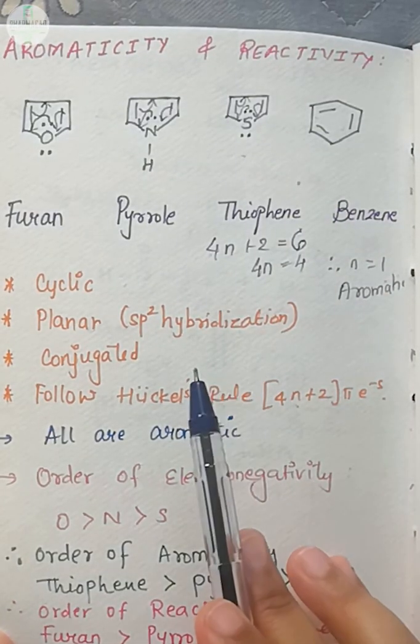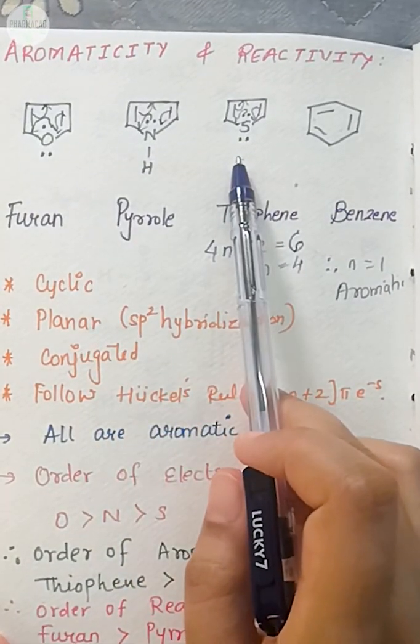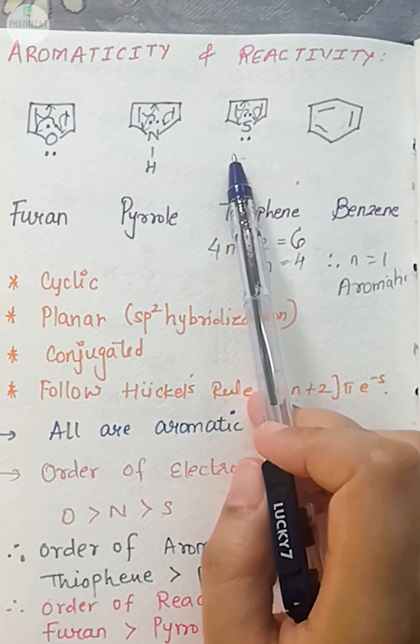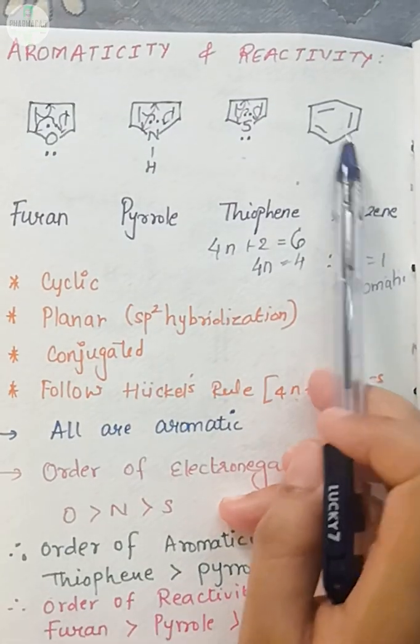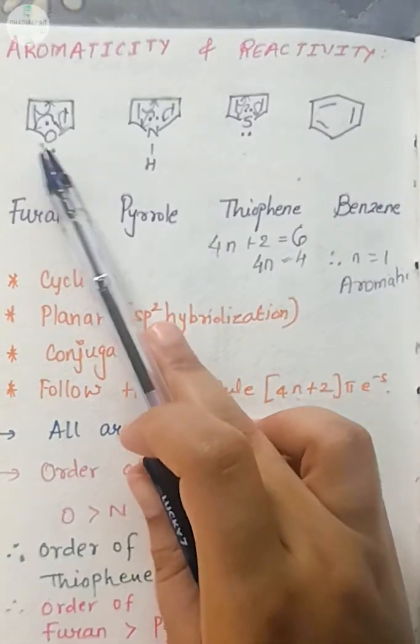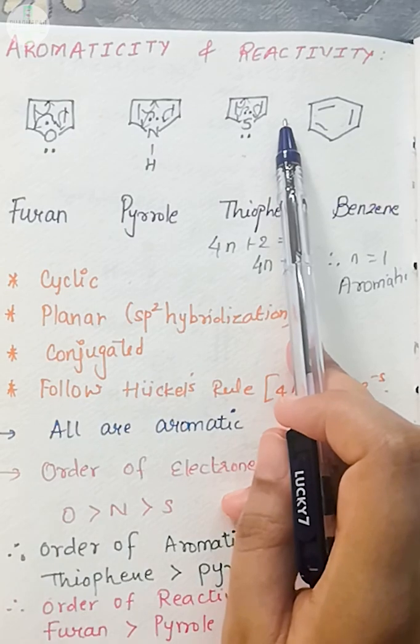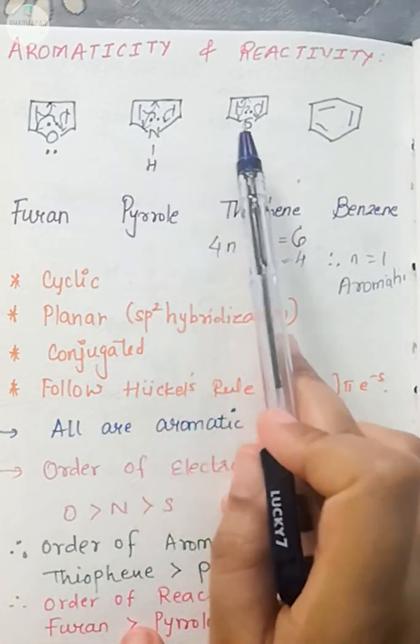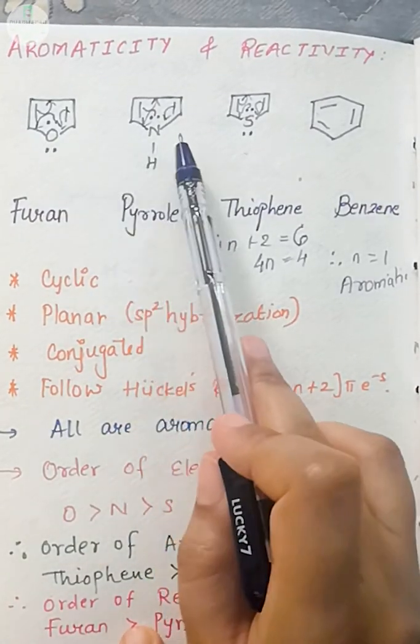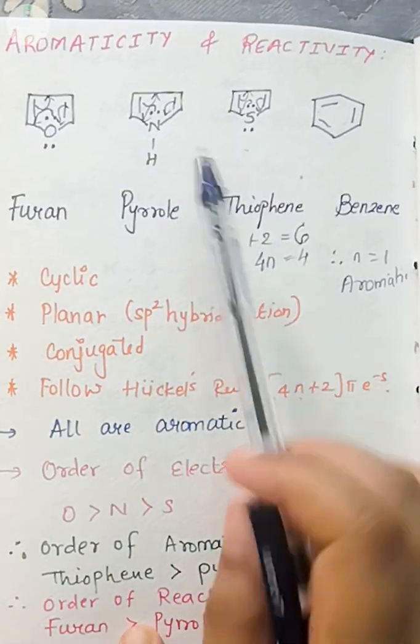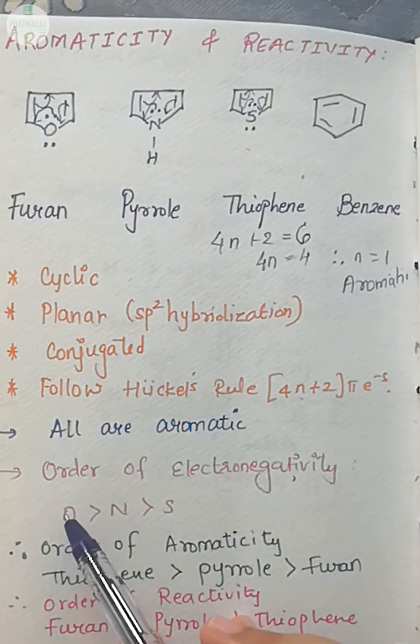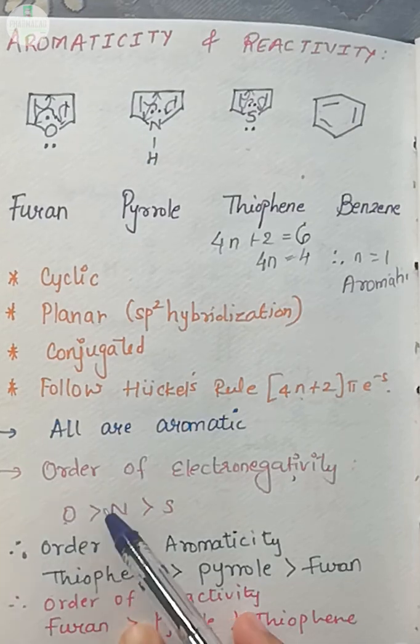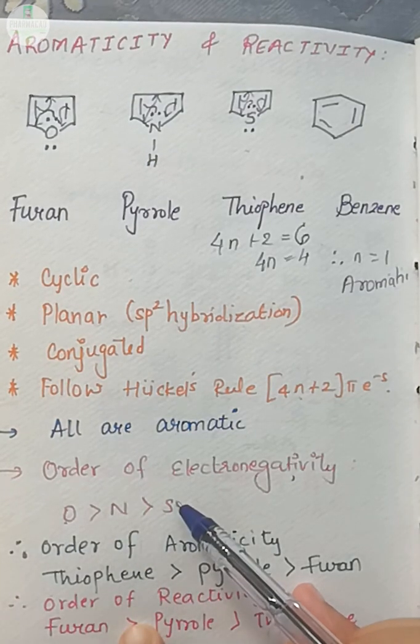Now we have to find out which of these three is most aromatic. We know that they are aromatic, but who is the most aromatic? Now benzene is out of picture. We are only going to talk about these 3 heterocycles. Now in these 3 heterocycles, the heteroatoms are electronegative. We have oxygen, nitrogen, and sulfur. And what is the order of electronegativity? The electronegativity highest is oxygen at 3.5, then we have nitrogen, and then we have sulfur.